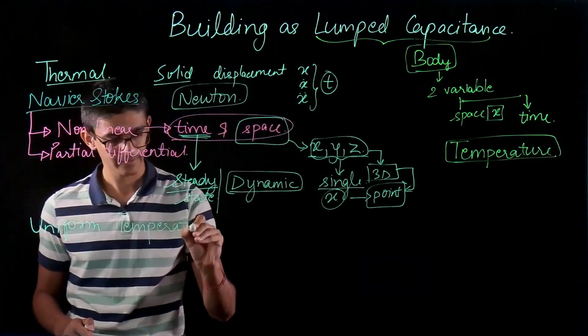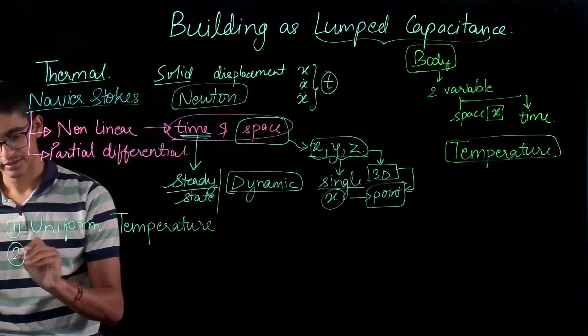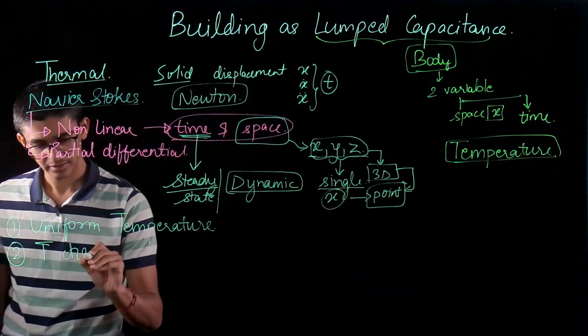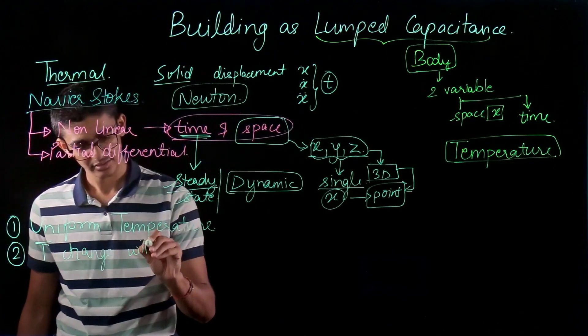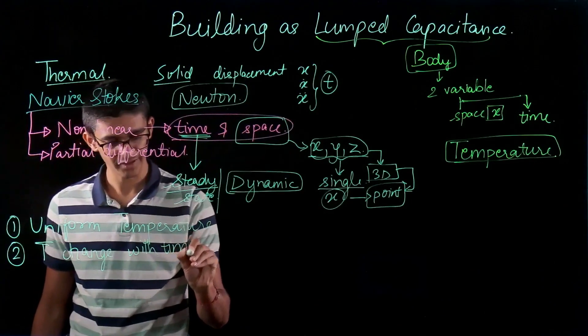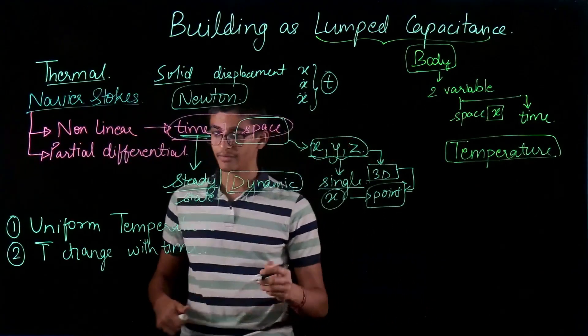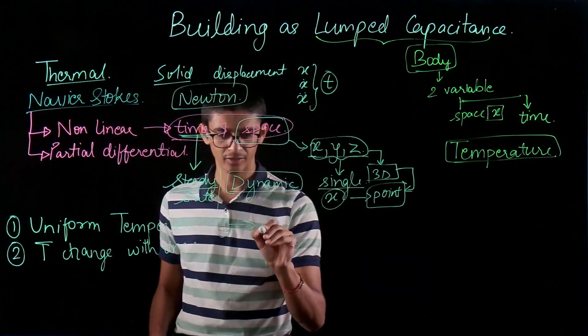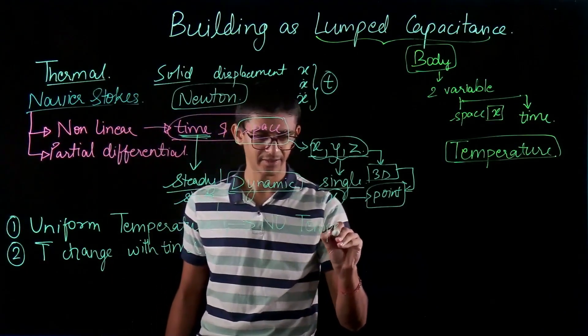So in total we have uniform temperature. That's one of the characteristics and the temperature T changes with time. These two properties are there for my lump capacitance model. And since it is uniform temperature it also means there are no temperature gradients.